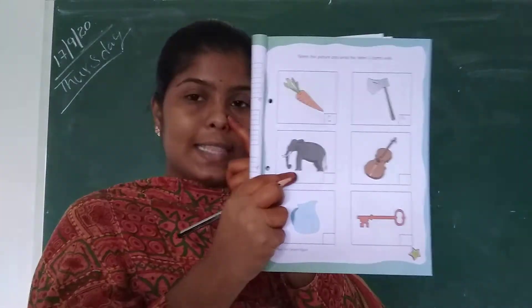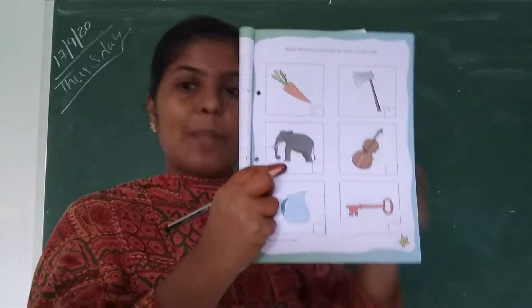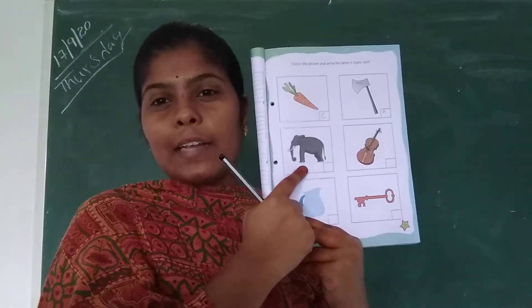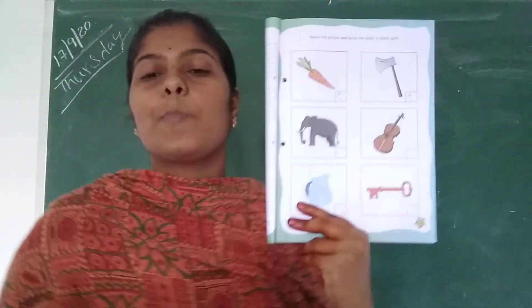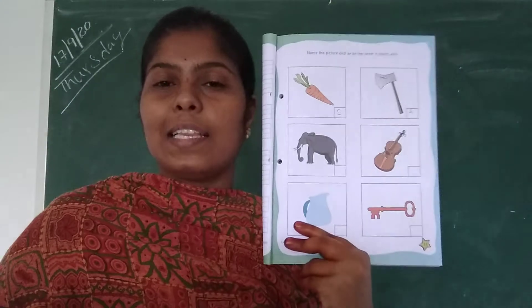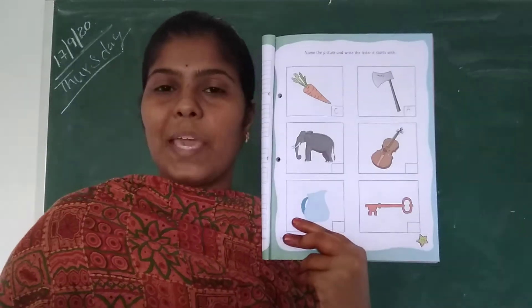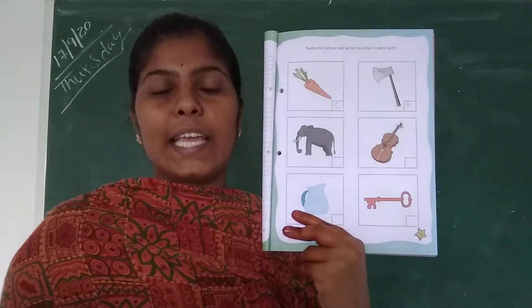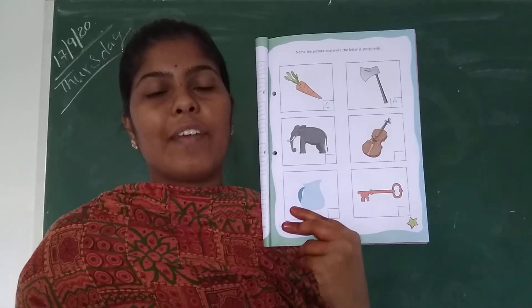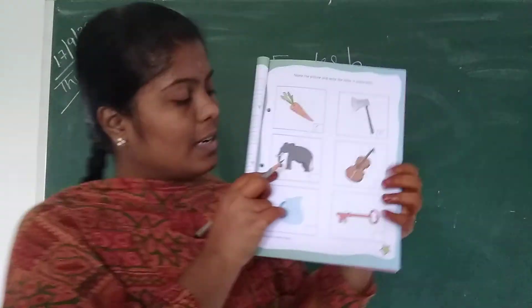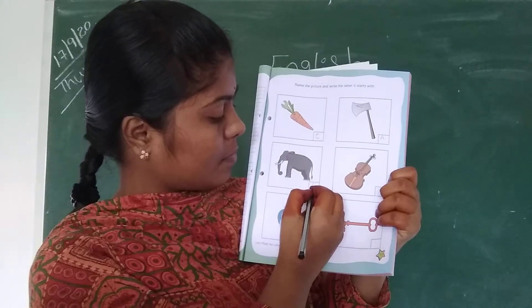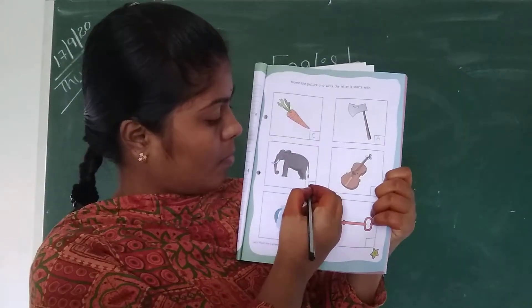See the third picture. What is this animal name? It is elephant. So the spelling of elephant — what is the spelling of elephant? E-L-E-P-H-A-L-D. So what is the starting letter of elephant? E. Write E here.